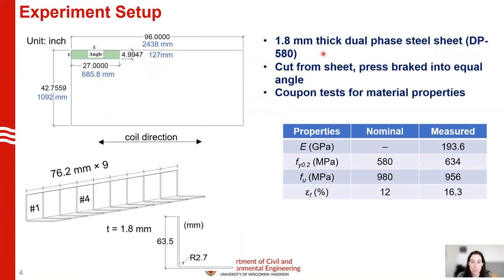What we did was cut from that sheet — shown here in green — and press-braked it into an equal angle in our sheet metal shop on campus. We designed it for a corner radius of 7/64 inch, which comes to 2.78 millimeters. The length is 27 inches or 686 millimeters. We then cut this into 9 individual pieces, 3 inches or 76.2 millimeters in size, using a drop saw.